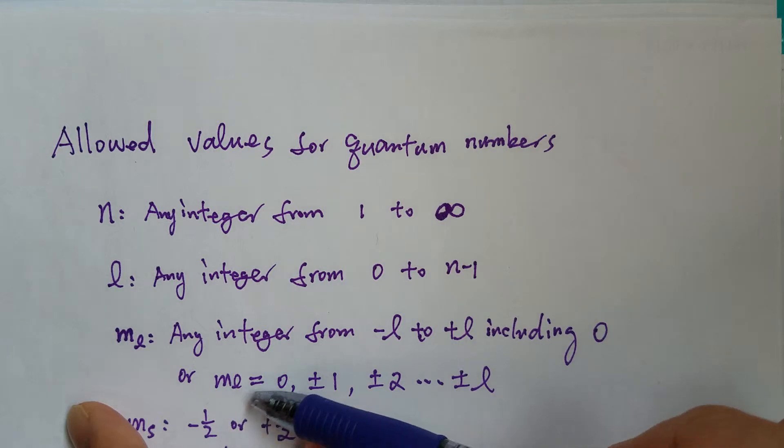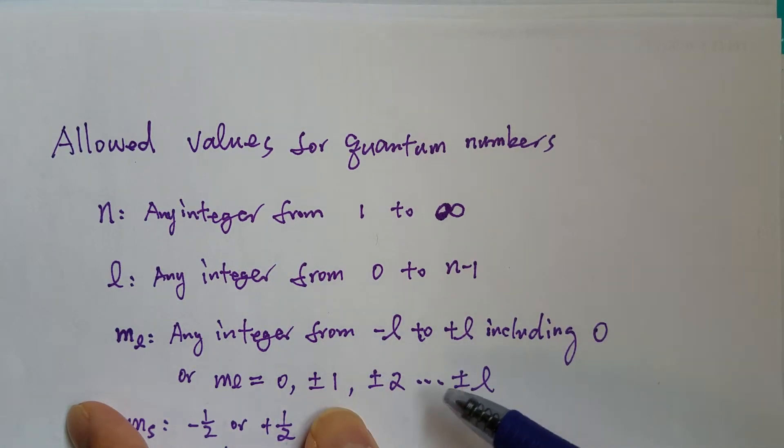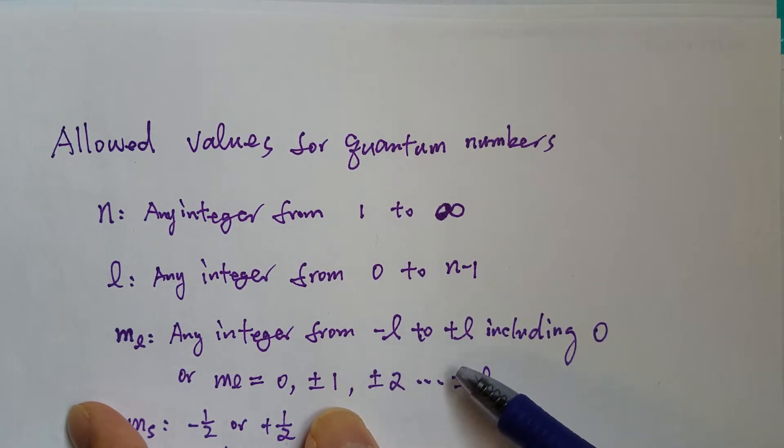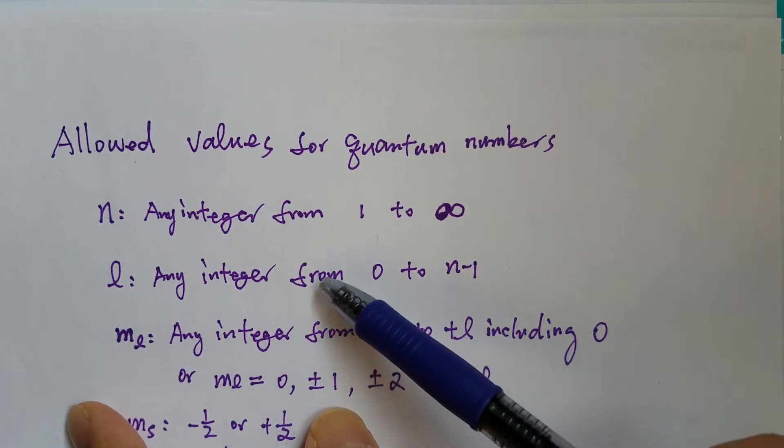Based on this definition, ML value equals zero plus minus one all the way to plus minus L. So therefore, for the maximum value, ML value here is one. Therefore, L in this case has to be one.